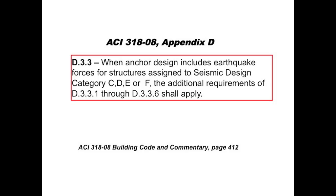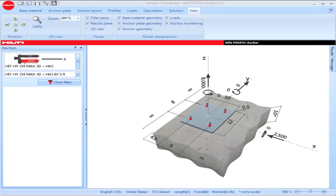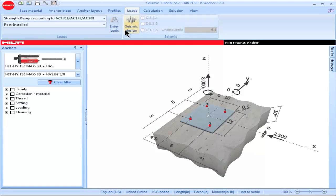ACI 318-08 Part D.3.3 contains provisions for seismic design of anchorages into concrete. Seismic design provisions are used when designing anchorages that include earthquake forces for structures assigned to seismic design categories C through F. PROFIS Anchor users can select seismic design per the provisions of D.3.3 by clicking on the Loads tab, then clicking on the box titled Seismic Design.